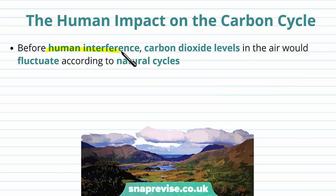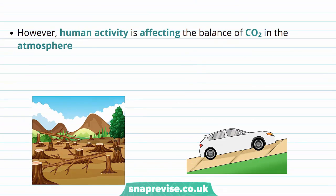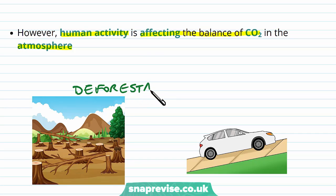Before human interference, carbon dioxide levels in the air would fluctuate — going up and down according to natural cycles — and this is meant to happen. However, human activity is affecting the balance of CO2 in the atmosphere. This can include activities like deforestation — removing masses of trees across the planet — and using fossil fuels.